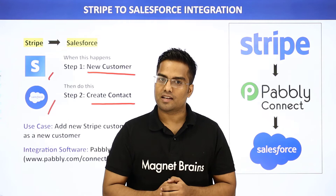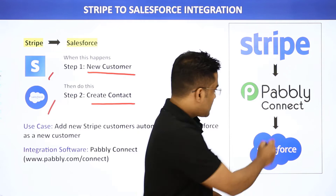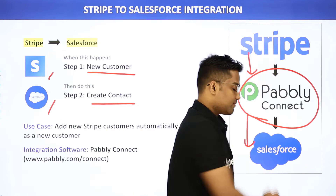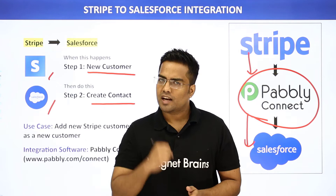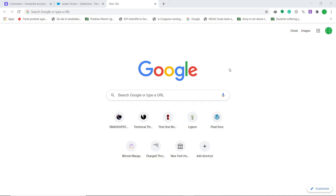In this video we will use Pably Connect to integrate Stripe and Salesforce. The best part of using Pably Connect is there is no need for coding skills or any programming language — it can be done easily. Let me show you on my screen. To begin the process, first type pably.com in your browser.